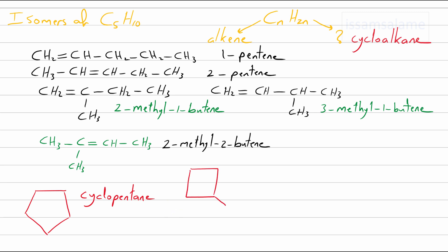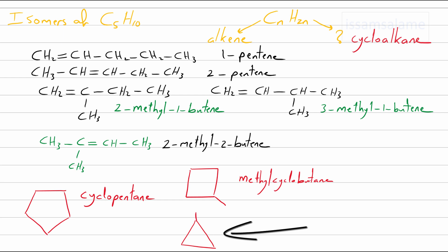Or we can have a four-carbon-atom ring with one carbon branched, called methylcyclobutane. There is no need to locate the substituent since we have only one substituent. Another possibility is a two-carbon-atom chain joined to cyclopropane, which is called ethylcyclopropane.